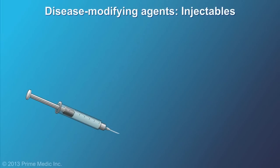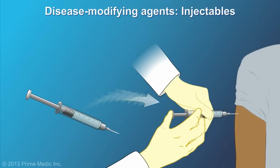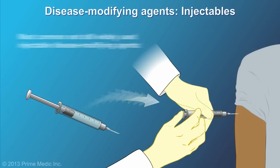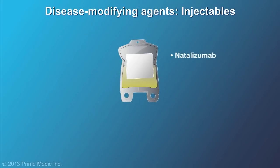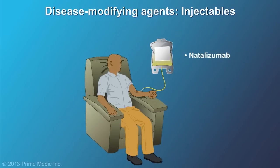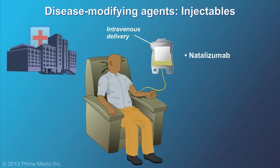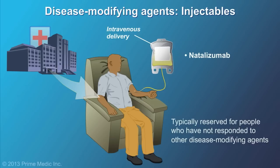The first generation of disease-modifying agents need to be injected and are still widely used. These include interferon-beta and glatiramer acetate. Natalizumab is another injectable medication; however, it needs to be delivered intravenously, meaning going into a clinic to have it administered by a healthcare professional. Usually, it is reserved for people who have not responded to other disease-modifying agents.